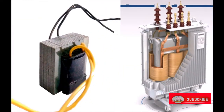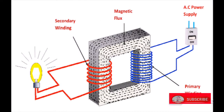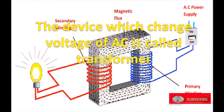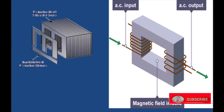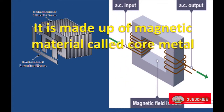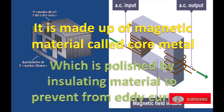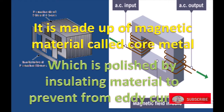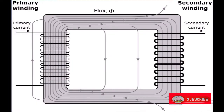The device which changes the voltage of AC is called a transformer. The instrument which changes the voltage of alternating current is called a transformer. It is made up of magnetic material called the core, which is coated with insulating material to prevent eddy current or leakage of current.